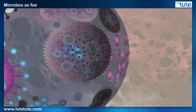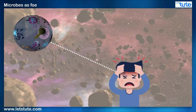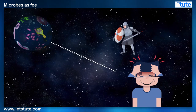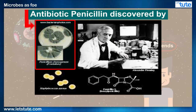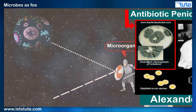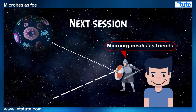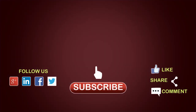Up to this point, we viewed microbes as harmful invaders, but they also have the ability to be our protectors. The discovery of the antibiotic penicillin by Alexander Fleming is a classic example for this. So tune into our next session to know how these little creatures can act like valuable assets to us. Until next time, keep watching, keep learning, and follow your curiosity.